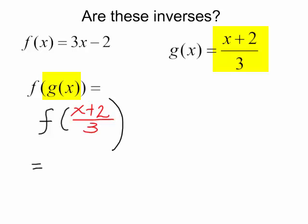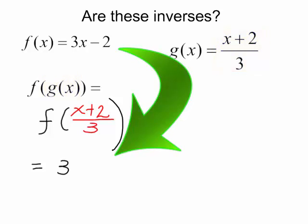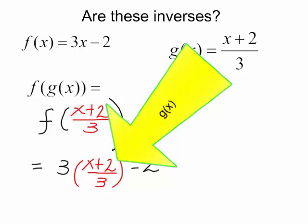And now I will look at the f function, which is 3x minus 2. So it will be 3 times x plus 2 over 3 minus 2. So this is the f function, 3 times whatever is in the parentheses minus 2. And I plug g of x into f of x.